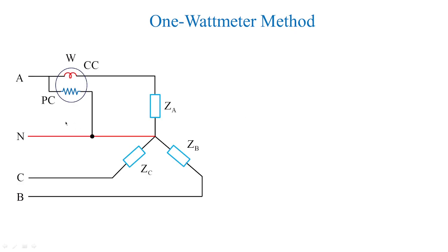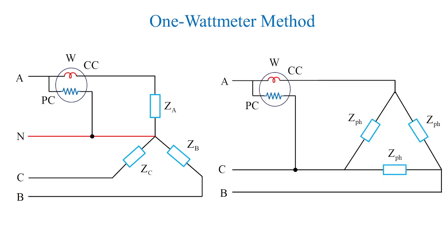In the one wattmeter method, for a star connected load, we have a neutral where the pressure coil is connected. Either phase A, B, or C can be used to measure the power, with the current coil in series with the load and the pressure coil in parallel with the load. The one wattmeter method is employed only for balanced load conditions and is not suitable for unbalanced load conditions. The same applies to the delta connected load.